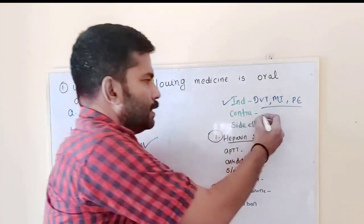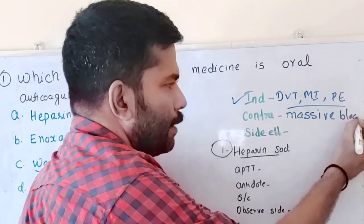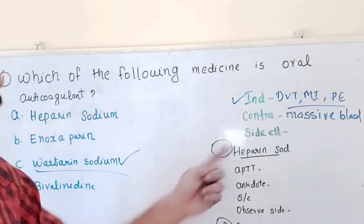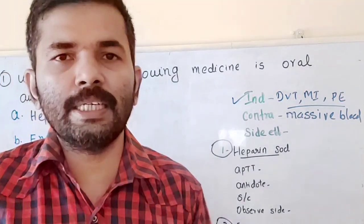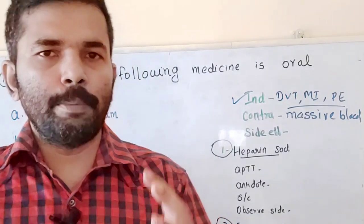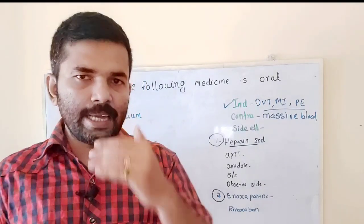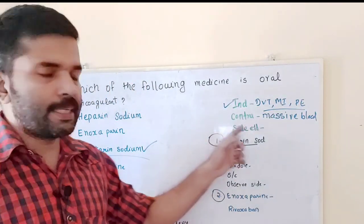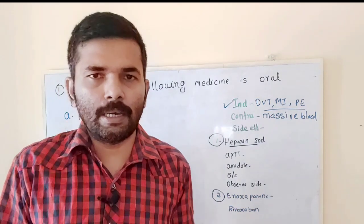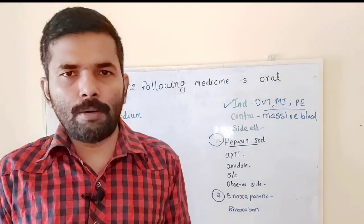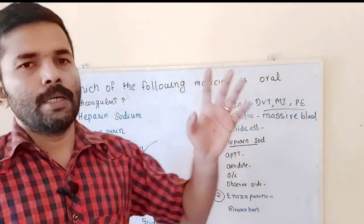Contraindications of anticoagulant therapy: massive bleeding. Anticoagulant therapy is contraindicated except in DIC — disseminated intravascular coagulation. Other contraindications include bleeding conditions like hemophilia, kidney disease, liver disease, neuro trauma, and severe hemorrhage.